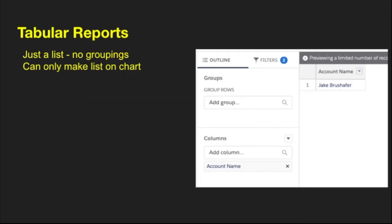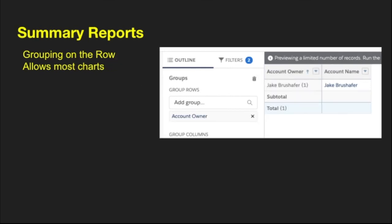The first type of report is the tabular report — just a bunch of columns aligned with no groupings. With a tabular report, you can only make lists on your dashboards. You can't do anything else with a tabular report.